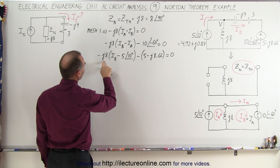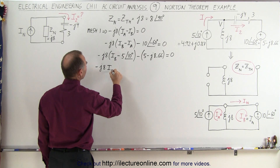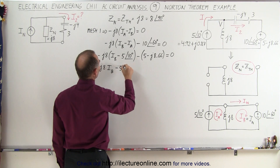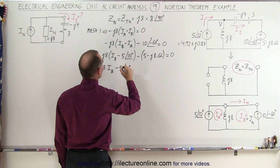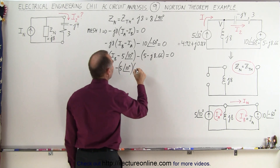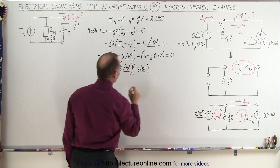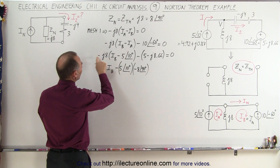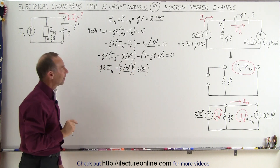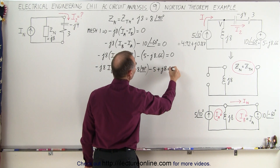Multiplying this out, we have minus J8 times I sub B. Multiplying minus 5 at a phase angle of 10 degrees times minus J8 — that's a minus 8 with a phase angle of 90 degrees. Checking the signs: minus times minus gives plus, so 5 times 8 is positive. Then we have minus 5 plus J8.66 equals zero.